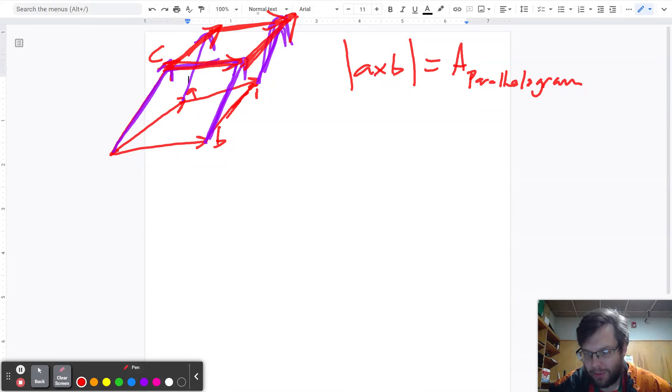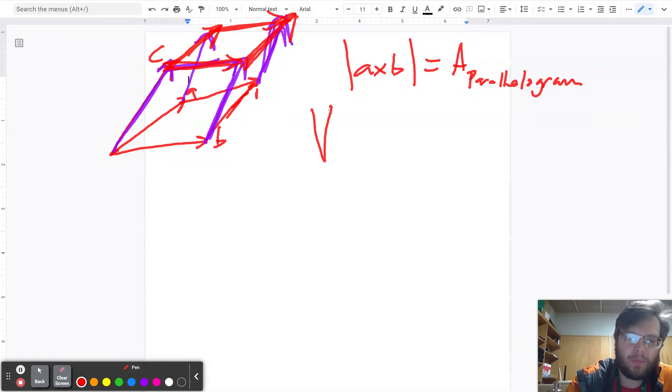Well, the way that we approach 3D shapes is we find the area of the base, and then we multiply by the height. So the volume of our shape is going to be the area of the base multiplied by the height.